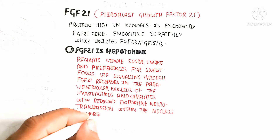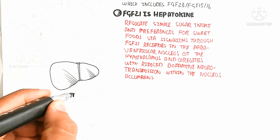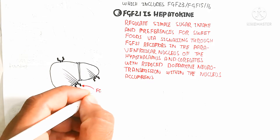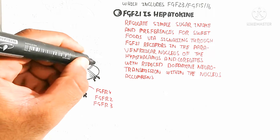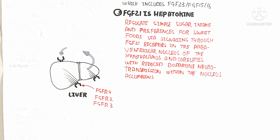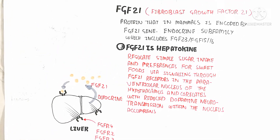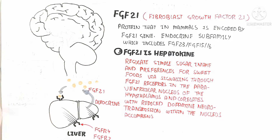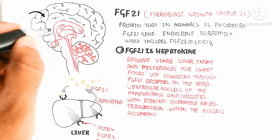Here I am drawing the liver. FGF21 is released during fasting. The liver contains FGF receptors — receptor one, two, three, and four. FGF21 can bind autocrinally with hepatocytes or paracrinally to other tissues. Autocrine binding changes the physiology and biochemistry of the liver. When blood glucose drops during fasting, it changes liver physiology — for example, triggering glycogenolysis.